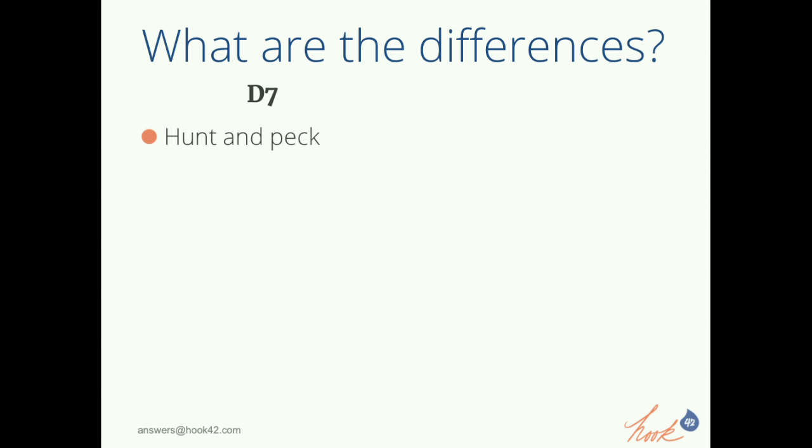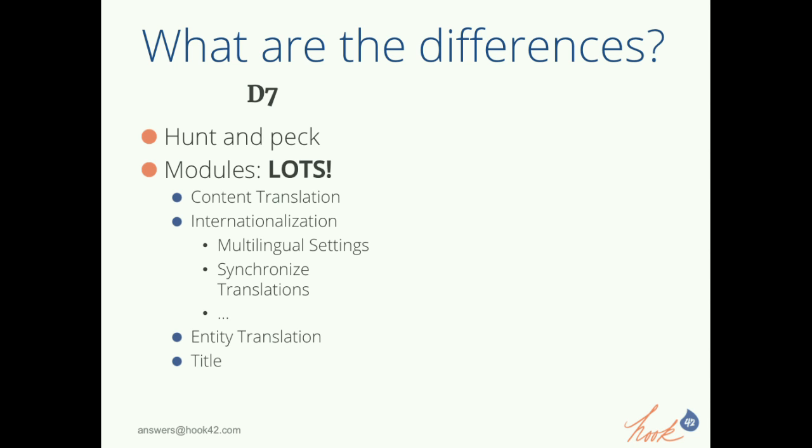The differences: in D7, there's lots of hunting and pecking, a lot of modules. There's content translation in core, then a whole suite of internationalization modules — I don't know, maybe 20 modules in there. You could also use entity translation, and sometimes people use both at the same time, which is super confusing. The title module is interesting: titles of nodes in Drupal 7 are properties, not fields. So if you use entity translation for node content in Drupal 7 by itself, you can't translate the title — which is kind of important. So you tack on this other module called the title module.